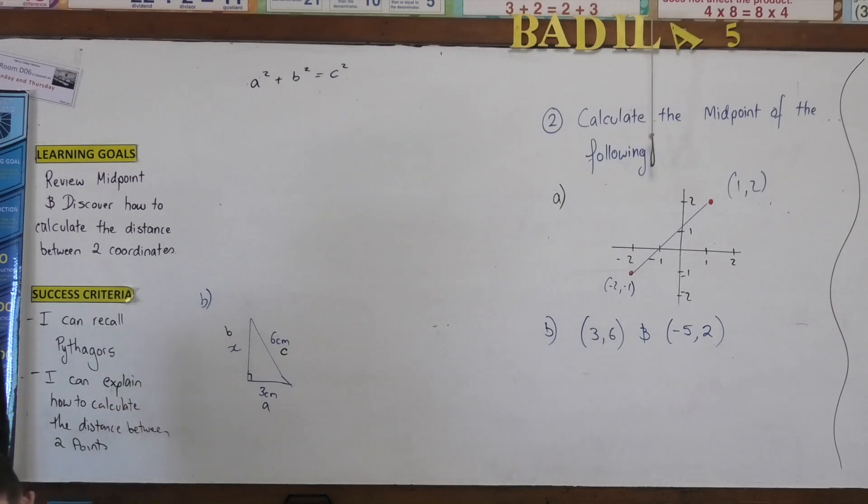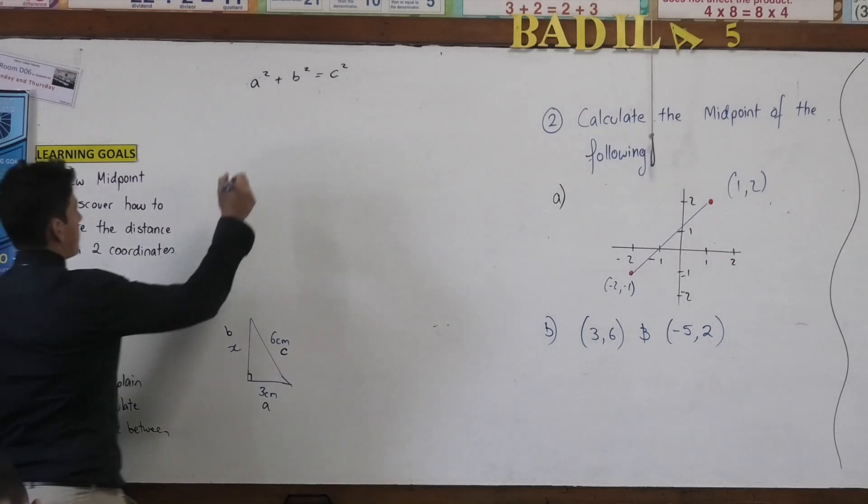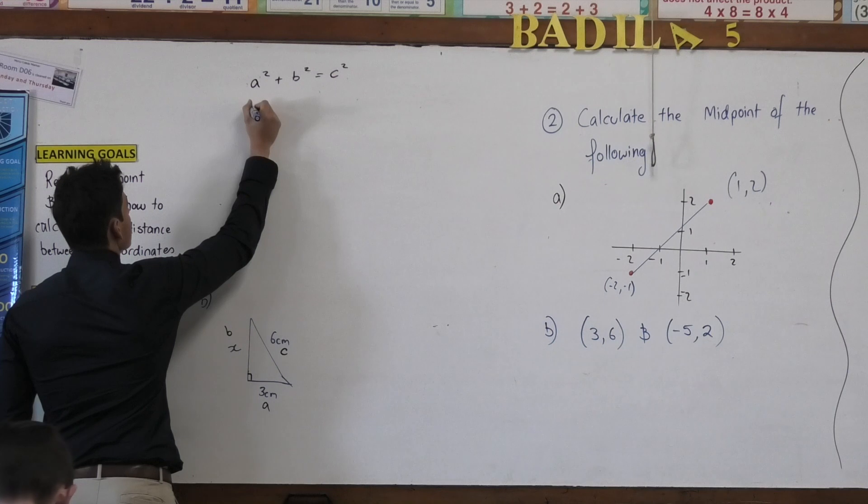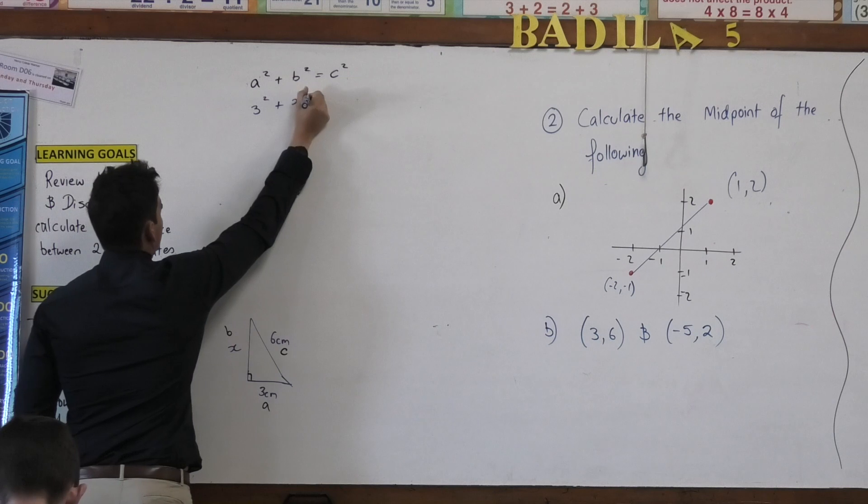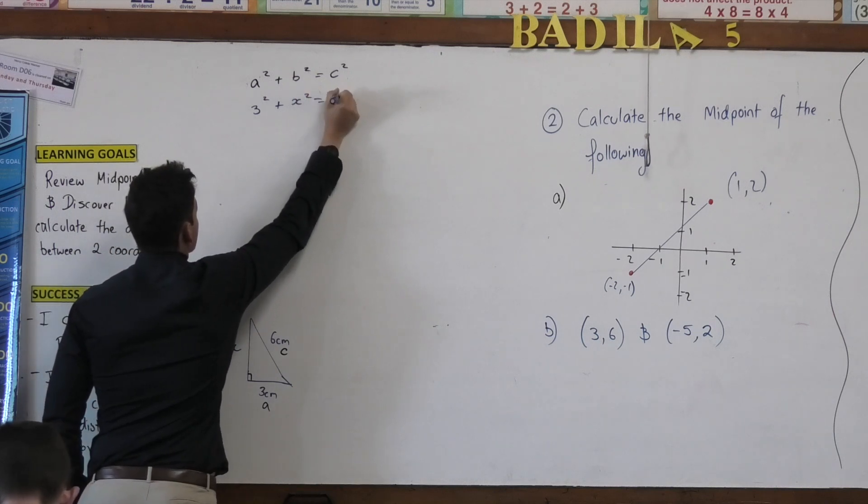What should I do with A? Should I leave it as A or should I change the number? What number should A be? 3 squared plus x squared equals 6 squared.